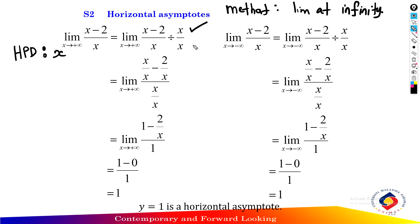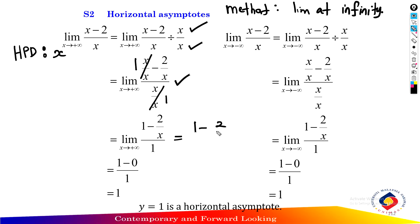Dividing numerator and denominator by x: x over x minus 2 over x, all over x over x. This simplifies to 1 minus 2 over x, all over 1. Substituting x approaching positive infinity: 2 over infinity equals 0, so we get 1 minus 0 over 1. Therefore the limit as x approaches positive infinity of x minus 2 over x equals 1.